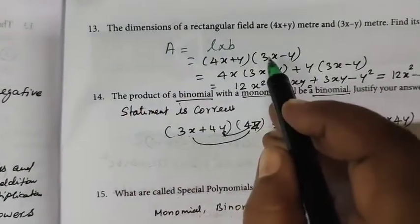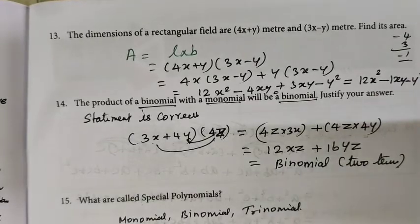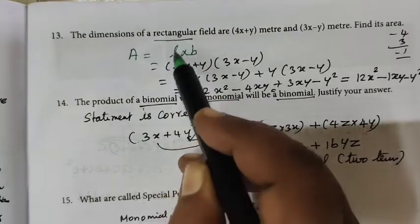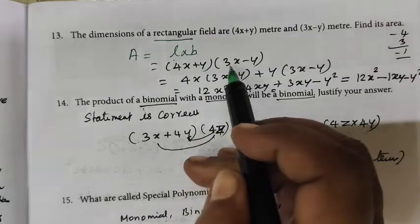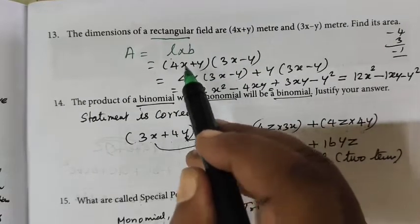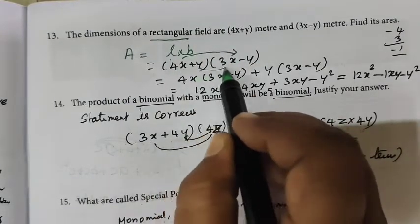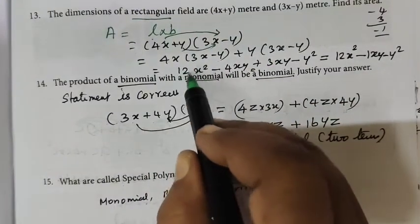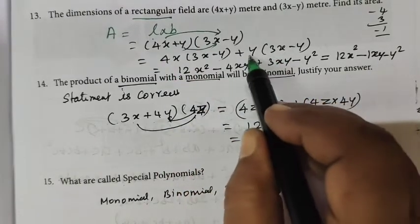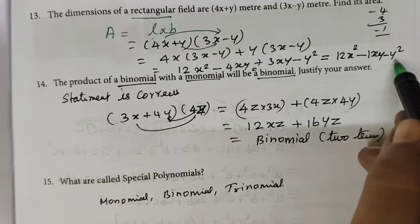The dimensions are 4x plus y meters and 3x minus y meters. Find its area. Area means L into B. It is a rectangular field, so A = L × B. So (4x + y)(3x − y): 4 times 3 is 12, x into x is x squared, then minus 4xy, then plus 3xy, then minus y into y is y squared. So the answer is 12x² − xy − y².